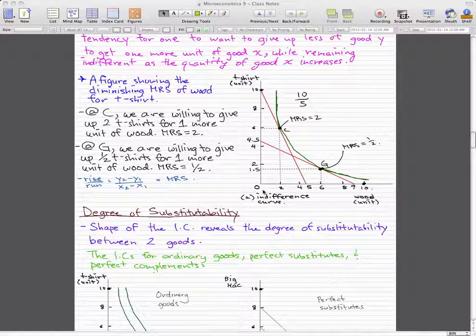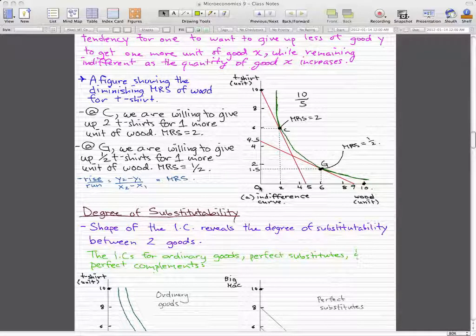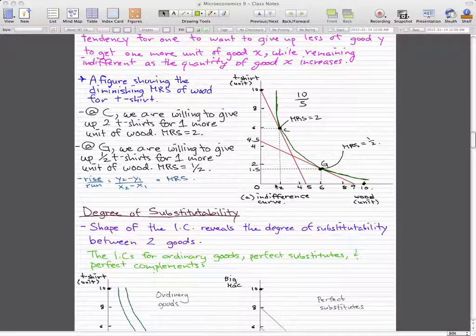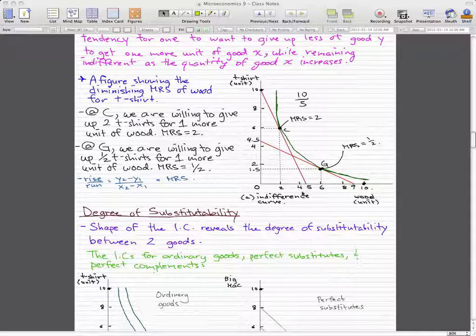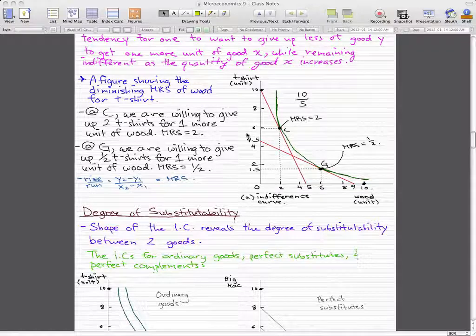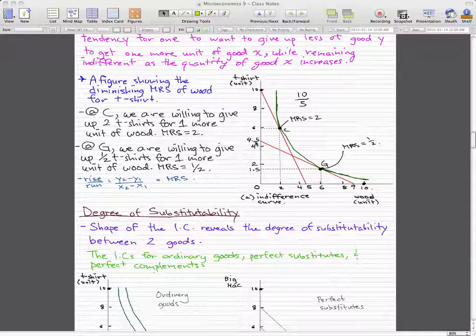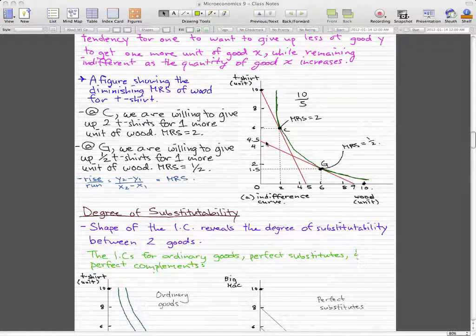It will be 10-0 representing y2-y1 over 5-0 representing x2-x1. So 10-0 over 5-0, that is 10 over 5, which equals 2. You can do the same thing for G, and by looking at this graph, calculate that on your own.